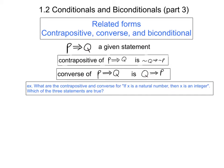By the way, our textbook defines the set of natural numbers to be the numbers 1, 2, 3, 4, 5, etc. It doesn't include 0 as a natural number.